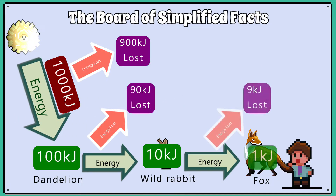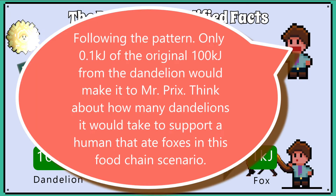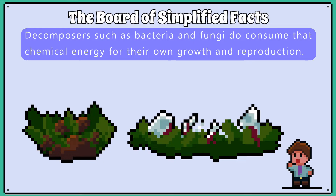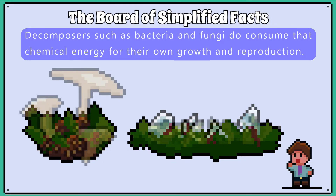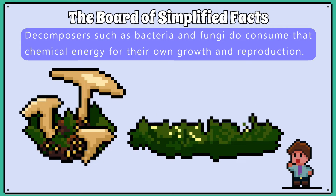So the fox only receives one kilojoule of energy from consuming the rabbit. This is why food chains in any habitat can't support endless chains with carnivores eating carnivores because of the energy losses. You also need to be aware that although energy is lost at each stage by uneaten parts of prey and waste, decomposers such as bacteria and fungi can consume that lost chemical energy for their own growth and reproduction.